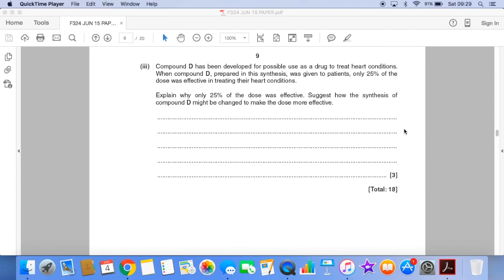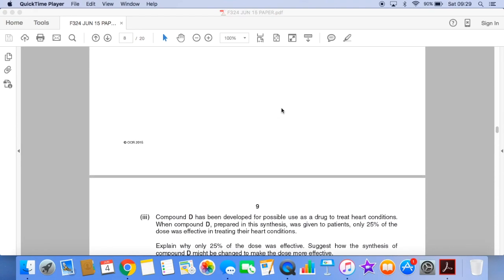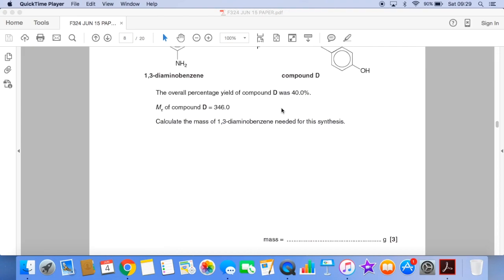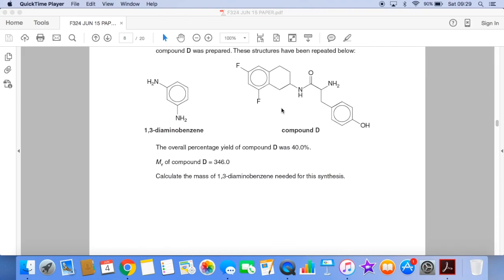And the last part of the question, it's a drug synthesis question. We're told that compound D has been developed for a drug to treat heart conditions. When compound D is prepared in the synthesis and given to patients, only 25% of the dose is effective. Explain why and suggest how the synthesis of D might be changed to make the dose more effective. So I'll just quickly go back to the structure of D because that's important to help answer the question.